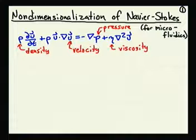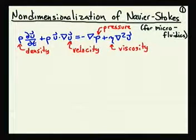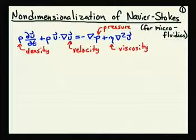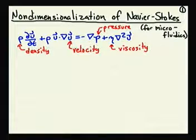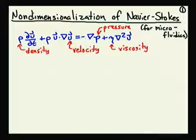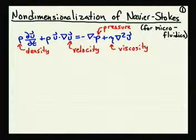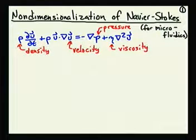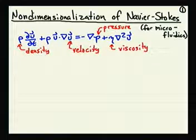Our approach is to non-dimensionalize these parameters — the velocity, the pressure, and the time — using five different factors: the density rho, the viscosity eta, some characteristic time, and some reference length and reference velocity. These five different parameters will then lead to two non-dimensional terms, which will describe the relative magnitudes of the four different derivative terms in these equations.